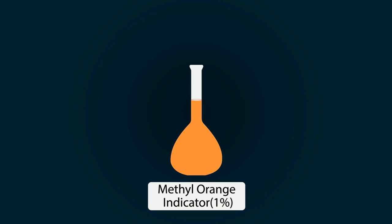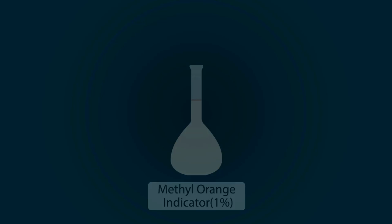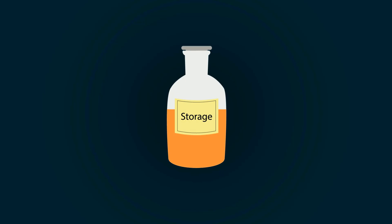You have successfully prepared 1% weight by volume methyl orange indicator. You can store it in any bottle you want and use it according to your requirement.